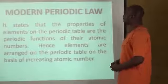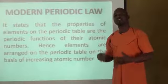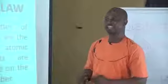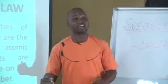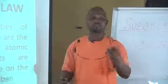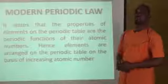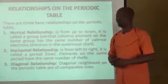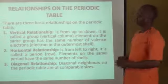The modern periodic law states that the properties of elements on the periodic table is the periodic function of their atomic numbers. Hence, elements are arranged on the periodic table in order of their increasing atomic number, from hydrogen with atomic number 1. At SS3 level you will stop at the 30th element, which is zinc with atomic number 30.